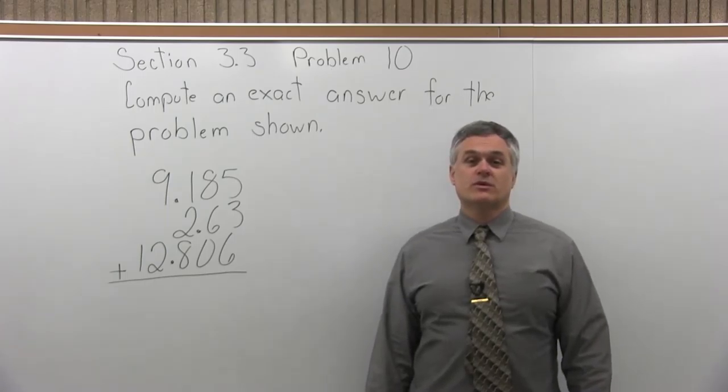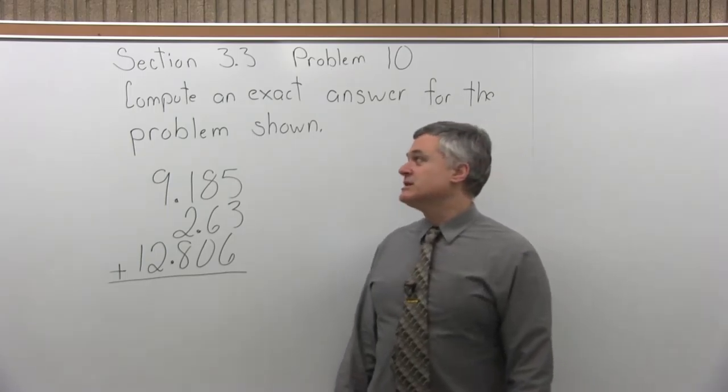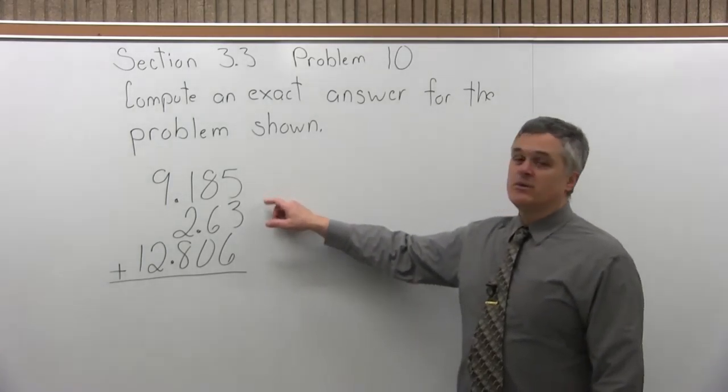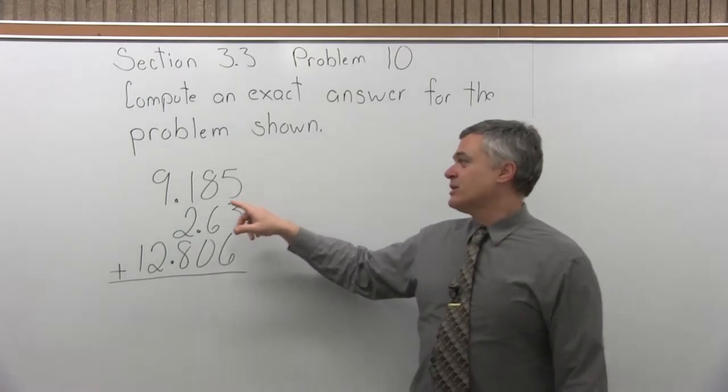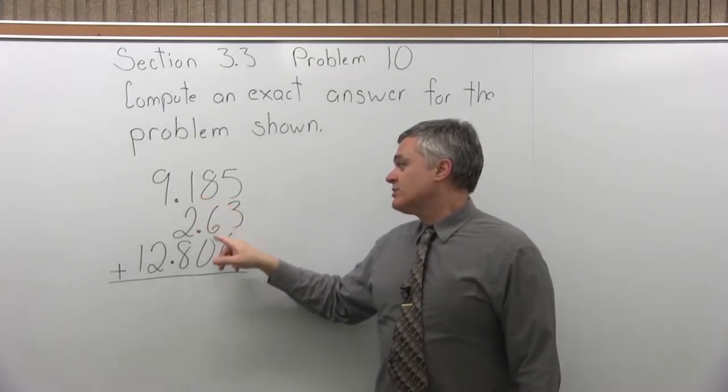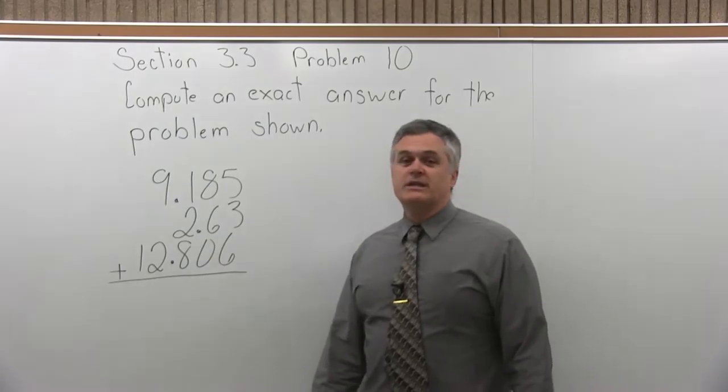This is Section 3.3, Problem 10. It says, compute an exact answer to the problem shown. We have three numbers with decimals to add together: 9.185, 2.63, and 12.806.